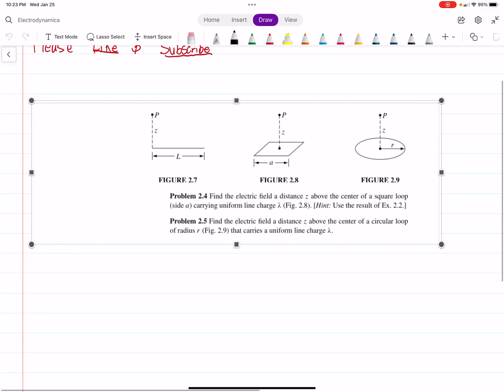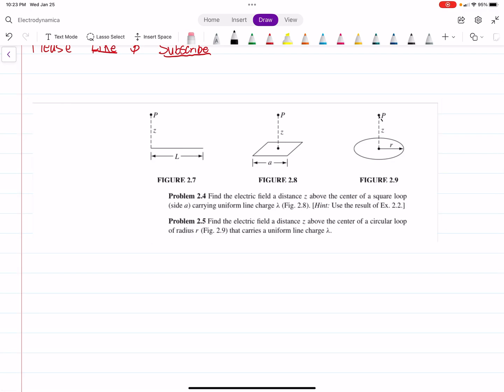Now let's get into the problem. For problem 2.5, we have this situation where we have this circle, and somewhere, let's call it here but it could be anywhere, is the distance which I'll call script R, from some infinitesimal line segment to the point that we're interested in.